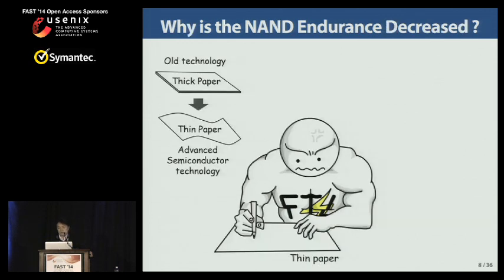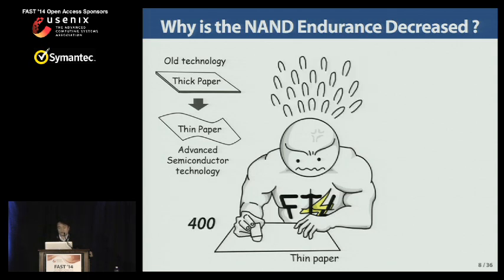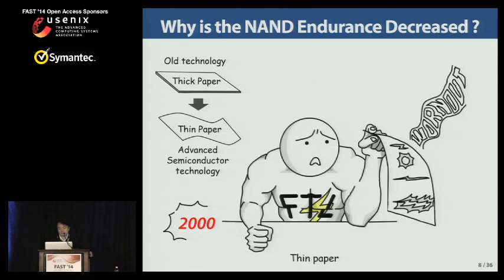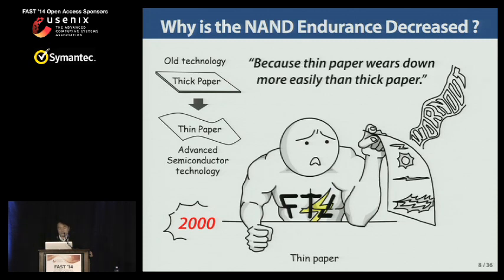Our FlashMan changes paper from a thick one to a thin one. What happens? He writes letters and grabs an eraser. A strong FlashMan does not seem to be able to use thin paper for a long time. He repeats writing and erasing very hard. Unfortunately, only after 2,000 repetitions, the paper is worn out. This is because thin paper wears down more easily than thick one.